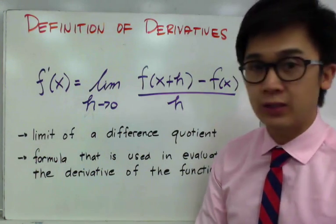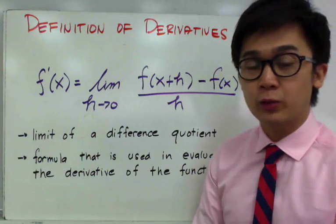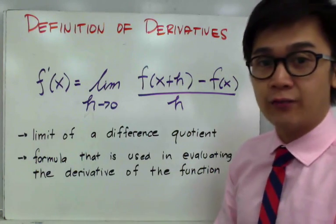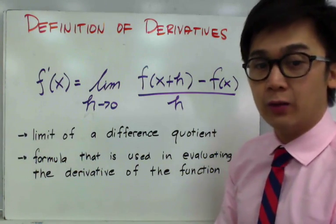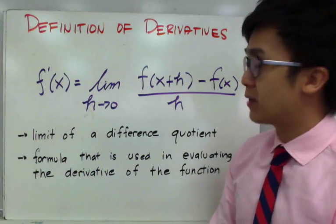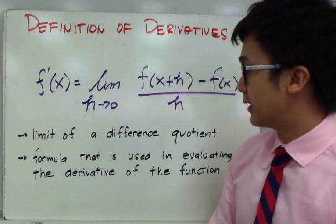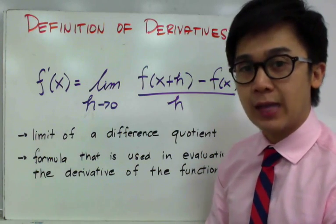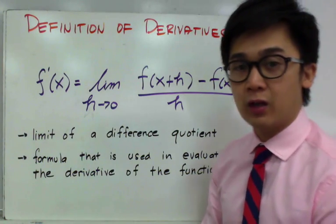Evaluating a limit is finding the derivative of a certain function using a particular formula. f prime of x, which is the derivative of the function, can be found using the limit of f of x plus h minus f of x, all over h, as h approaches 0. We are using the limit of a difference quotient, which is the method used in finding the derivative of a function.